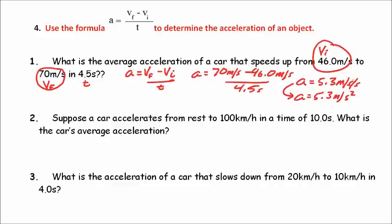Meters per second per second can be written as meters per second squared — they mean exactly the same thing. What does it really mean? It means that while this car is speeding up, its velocity increases by 5.3 meters per second every second. That's the answer to question one: 5.3 meters per second squared.